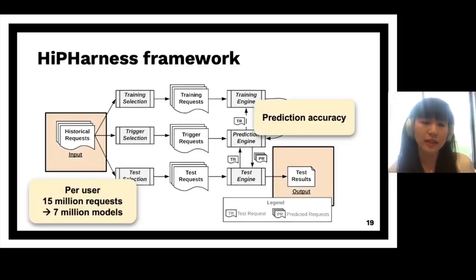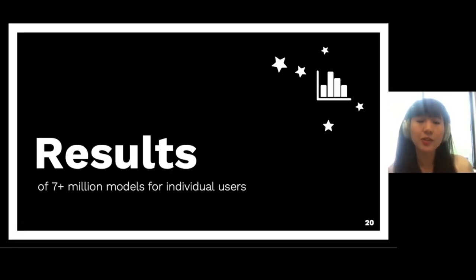One example of such a knob is how much historical request is used to build the prediction model. So I do want to point out the input and output. The input is the historical request of a particular user. In total, we collected over 15 million history requests, and we built over 7 million prediction models for each individual user. So for each user, there could be multiple models because you can build the model using different prediction algorithms. And you can also slice and dice how much training data is used to build the model. And the output of hip-hardness is the prediction model's accuracy.